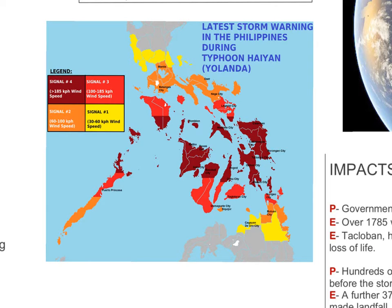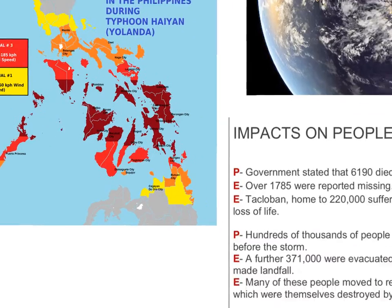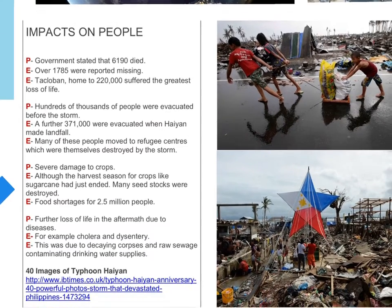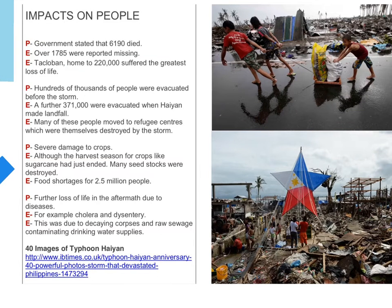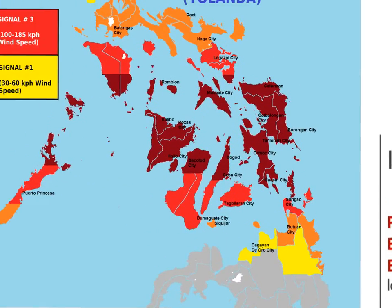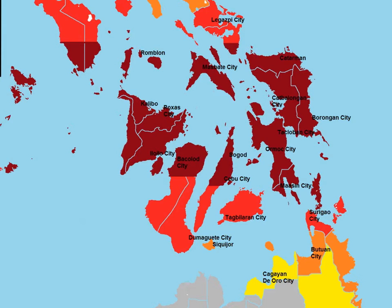Most of what we've covered so far will be mostly introductory for GCSE questions. The key part of this case study relates to impacts on people and impacts on property. We've arranged our points in point-evidence-explained format to maximise marks. The first impact on people: 6,190 people were confirmed dead, and over 1,700 were reported missing. Tacloban City, home to 220,000 people, suffered the greatest loss of life, as it was one of the first places to feel the full force of the typhoon on the east of the Philippines.